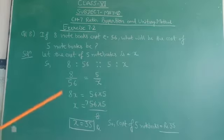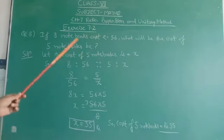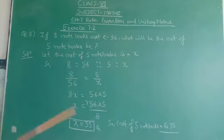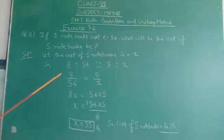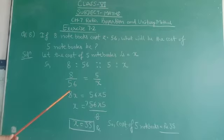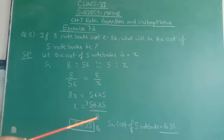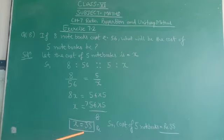In this question, we find the cost of 5 notebooks. It is considered to be X. So we can write 8 ratio 56, proportion to 5 ratio X. It is written as 8 upon 56 is equal to 5 upon X. 8X is equal to 56 into 5. X is equal to 56 into 5 upon 8. 8 times 7 is equal to 56. The value of X is 7 into 5, that is 35.